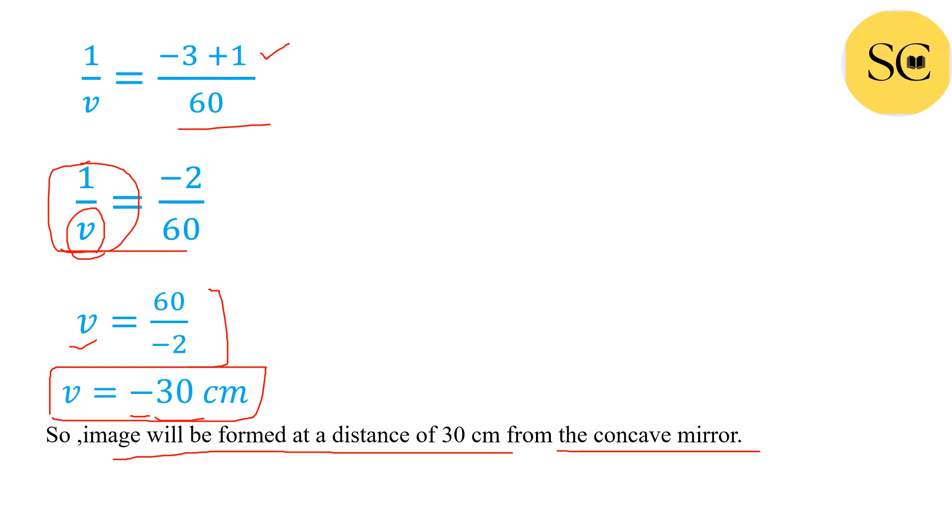Now we will have to find magnification. The formula is m is equal to minus v upon u. Now place the values m is equal to minus v is minus 30 and the value of u is minus 60.